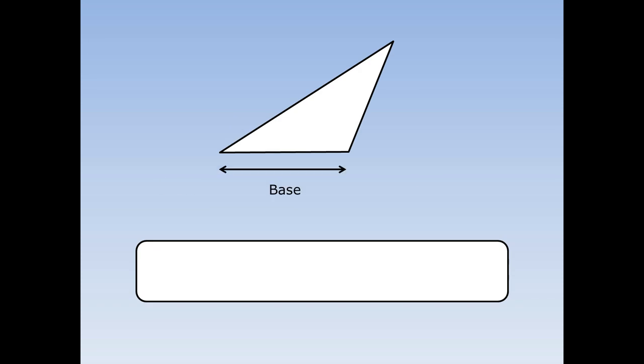If we label the different bits of this triangle, the length along the bottom is called the base, and we also need the perpendicular height, or the height at right angles to the base. But the top of this triangle isn't above the base, so I need to draw a little dotted line out from the base and then find the perpendicular height.